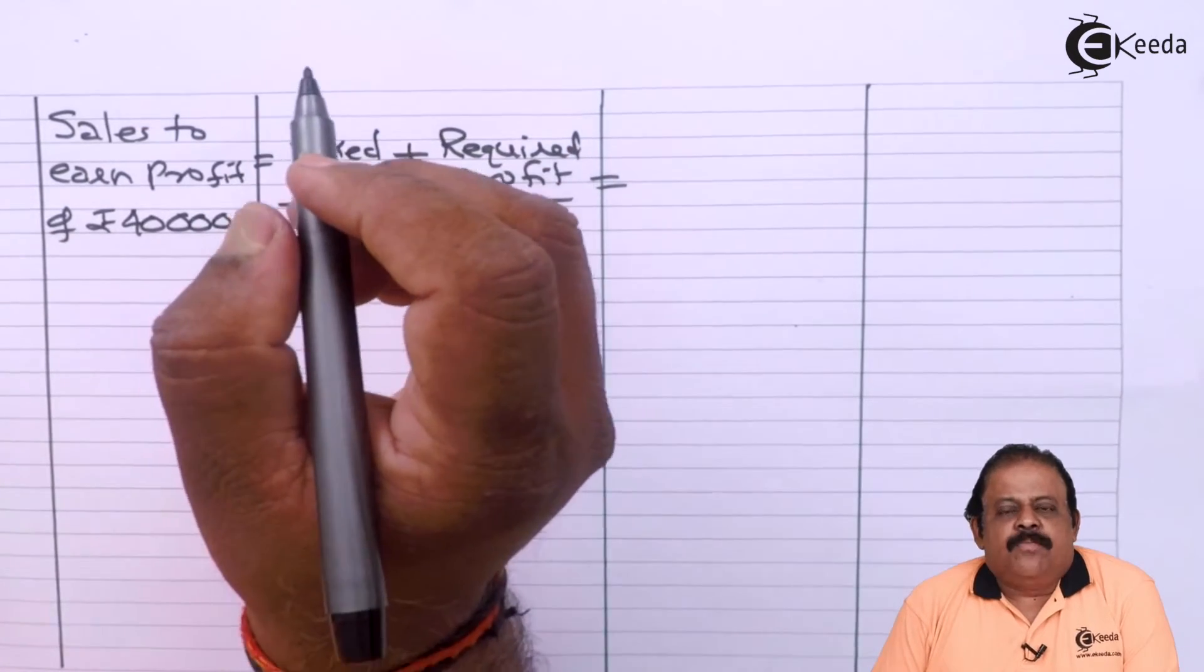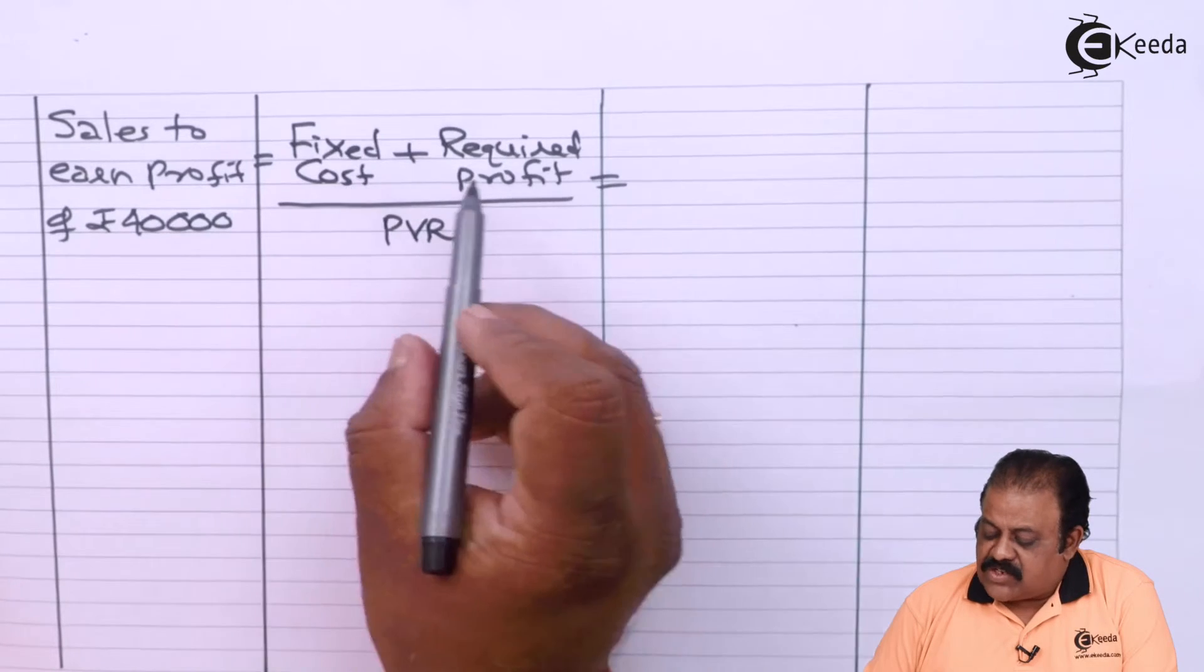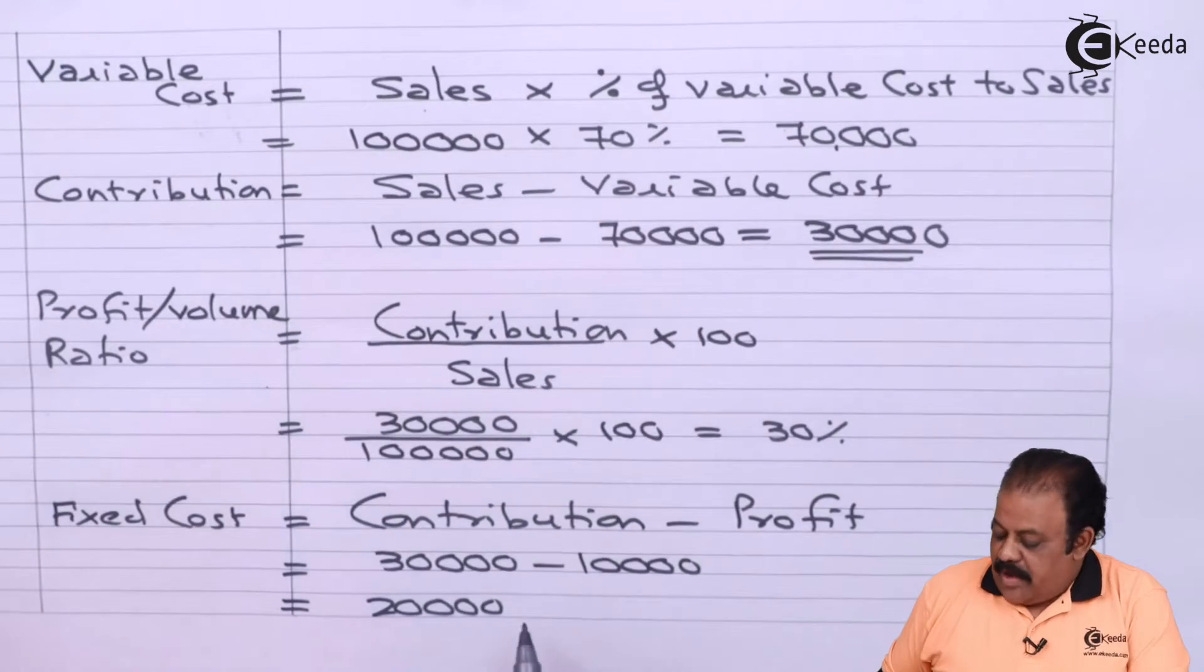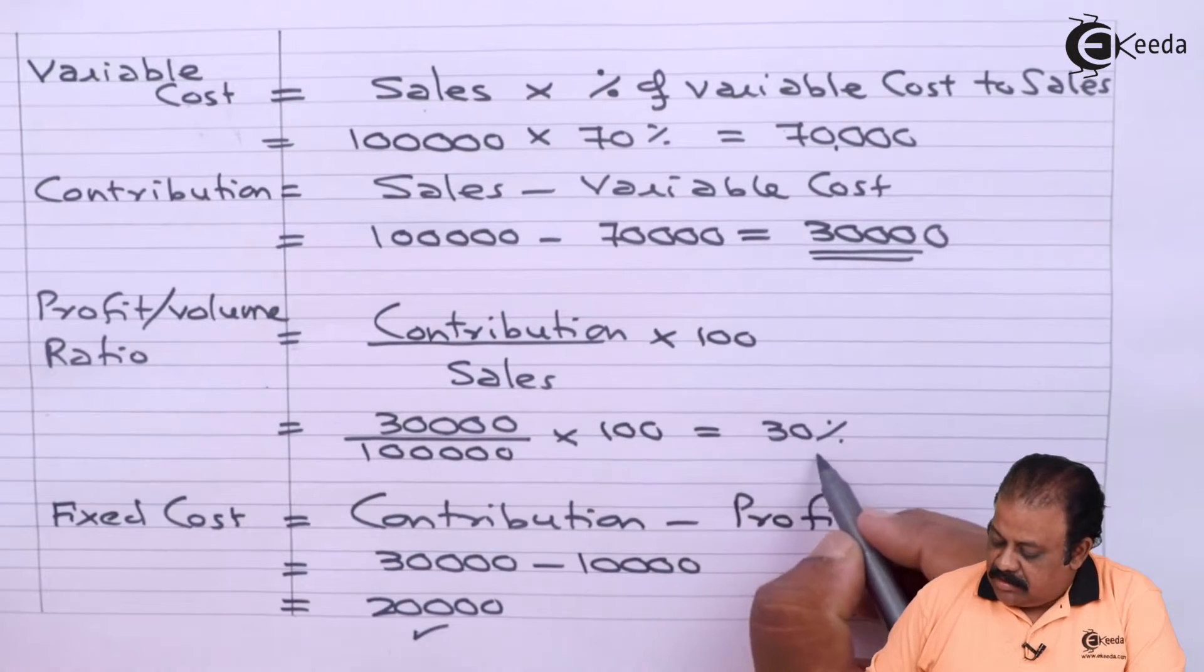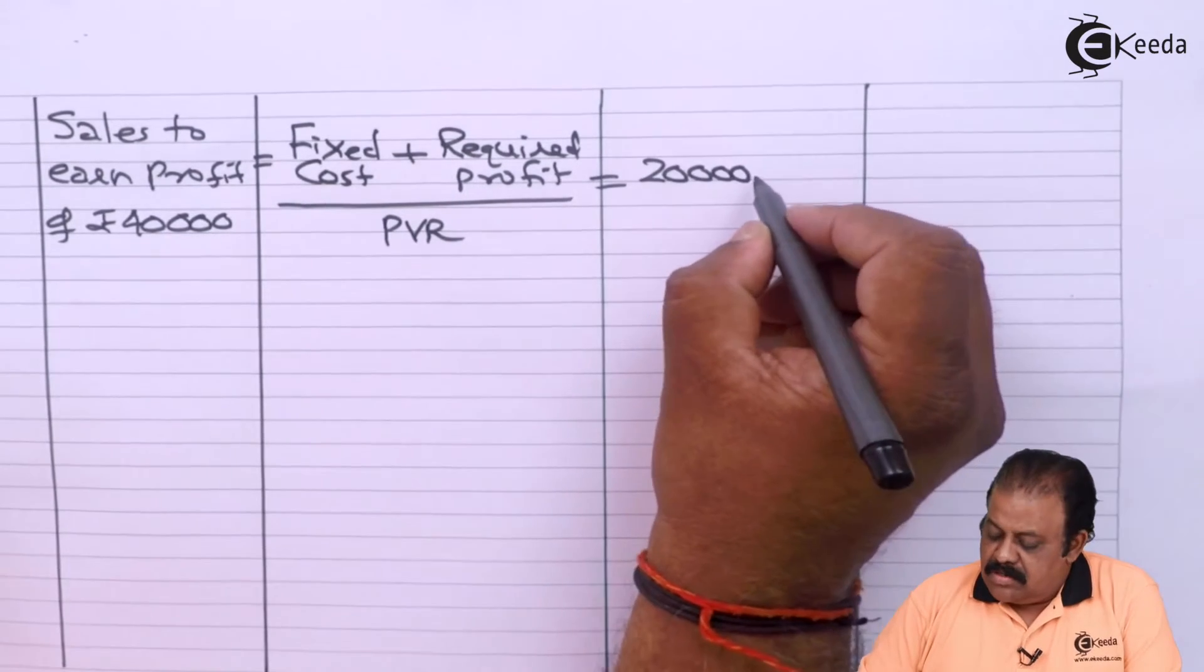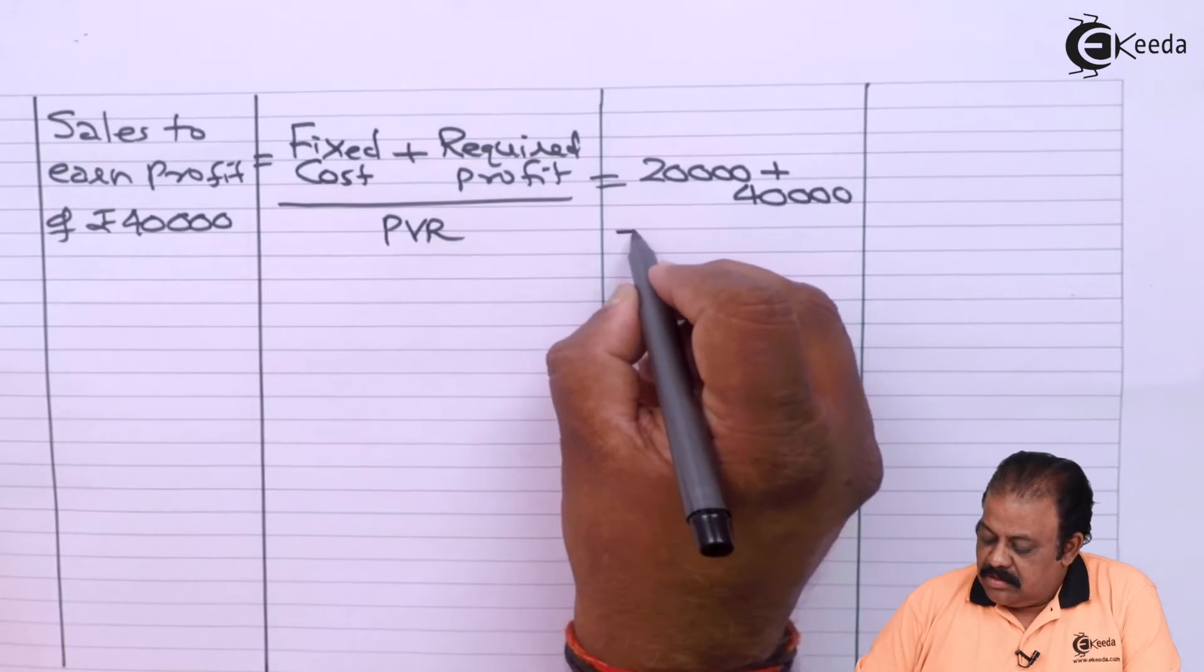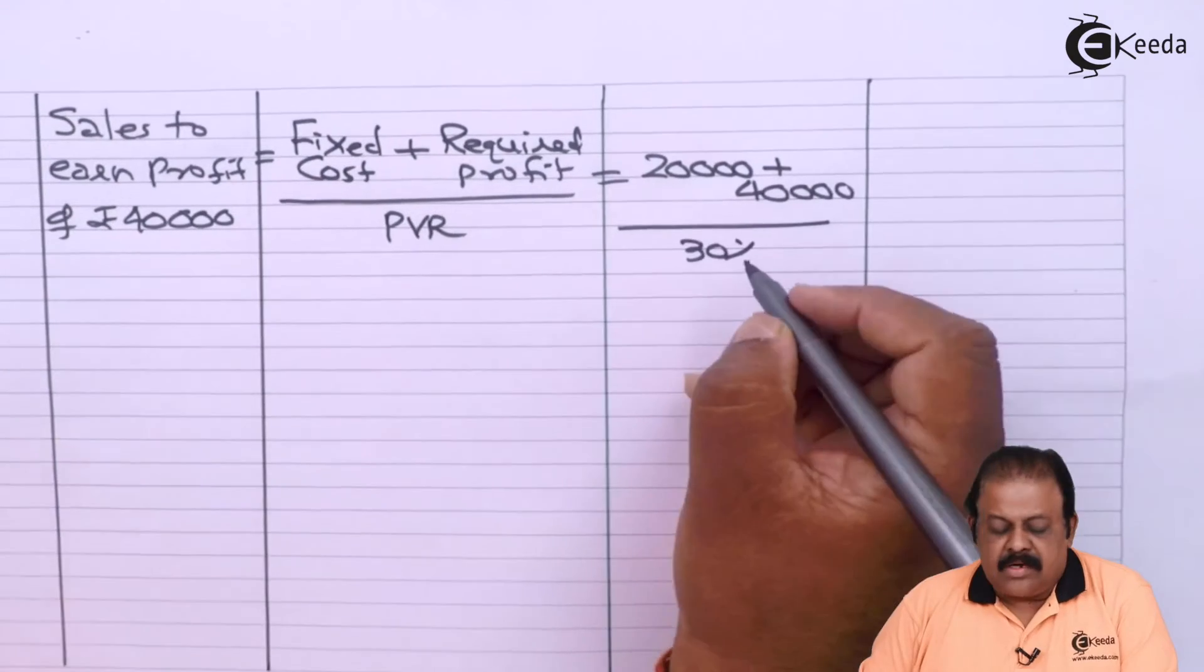To find out sales to make profit of 40,000 we will require to use formula: fixed cost plus required profit divided by PVR. Fixed cost we have calculated 20,000 and PVR we have here 30%. So fixed cost 20,000, required profit 40,000, divided by profit volume ratio 30%. So sales to earn profit rupees 40,000, sales we are required to make two lakhs.